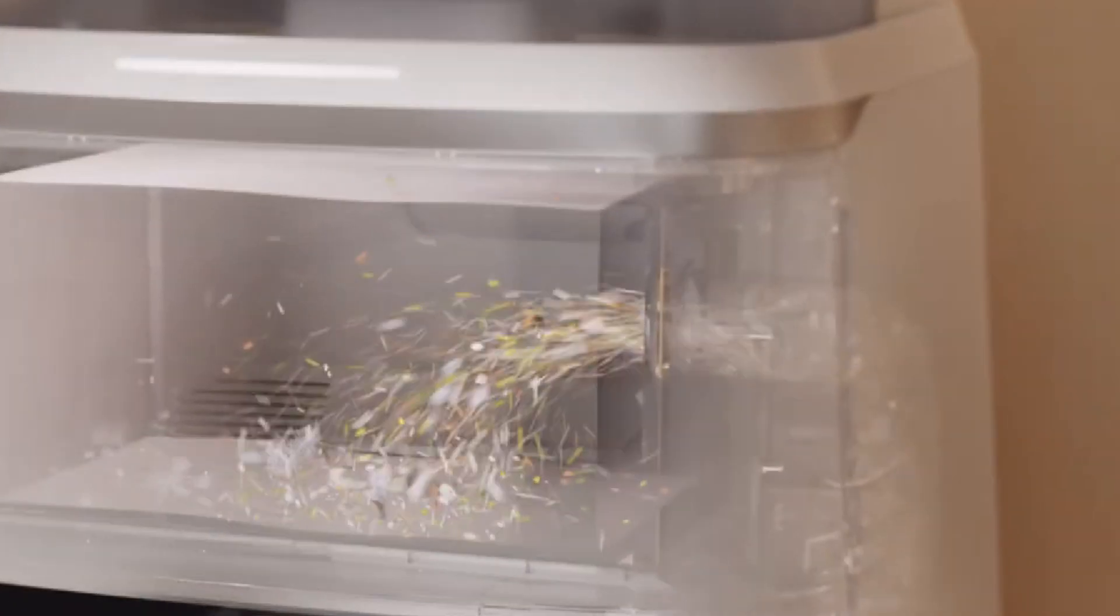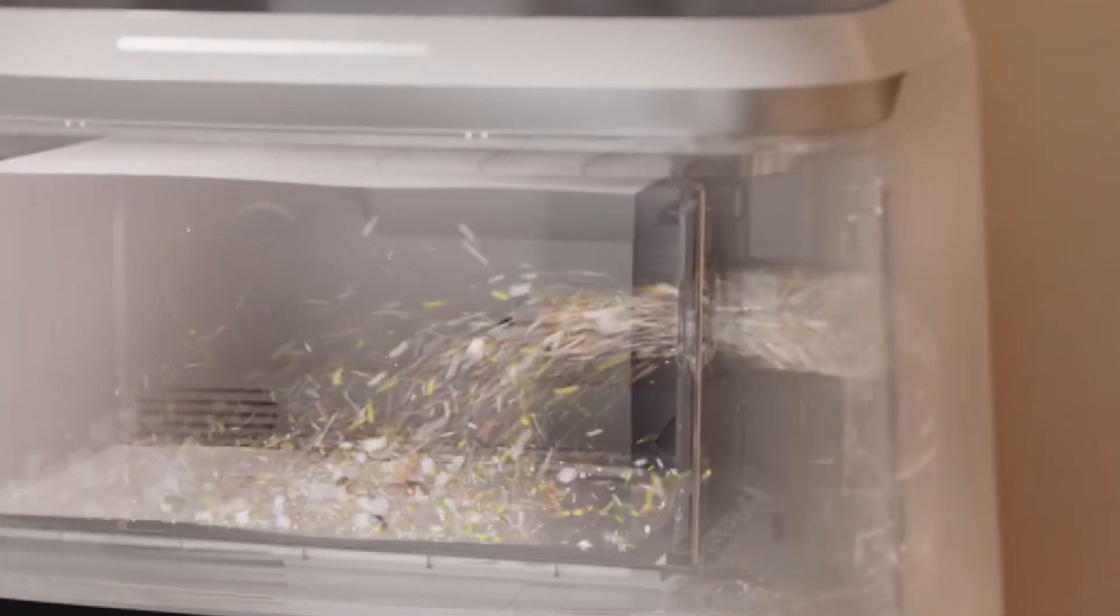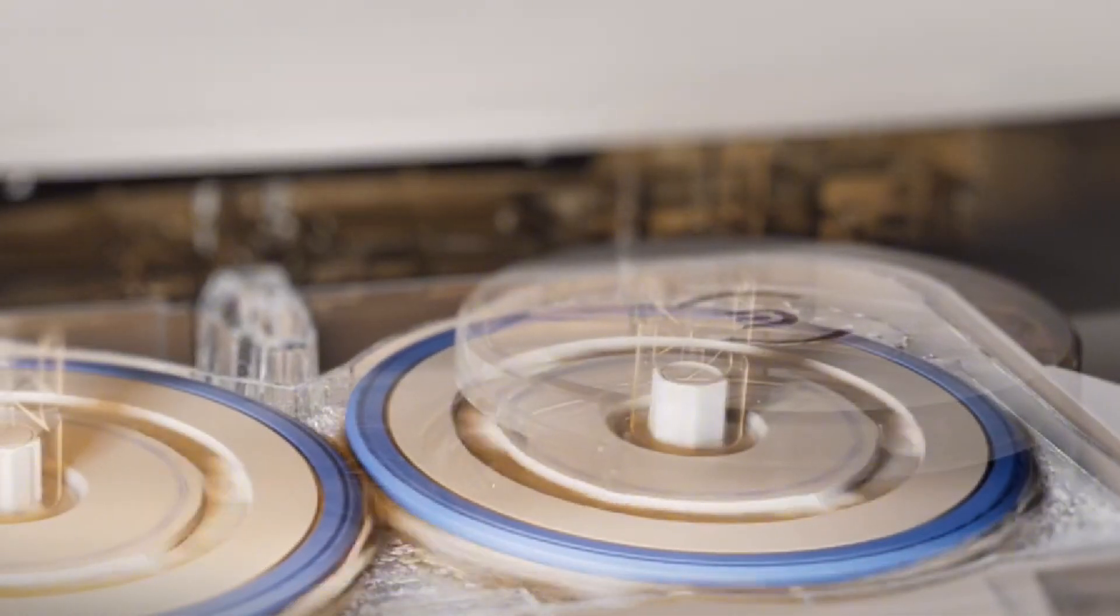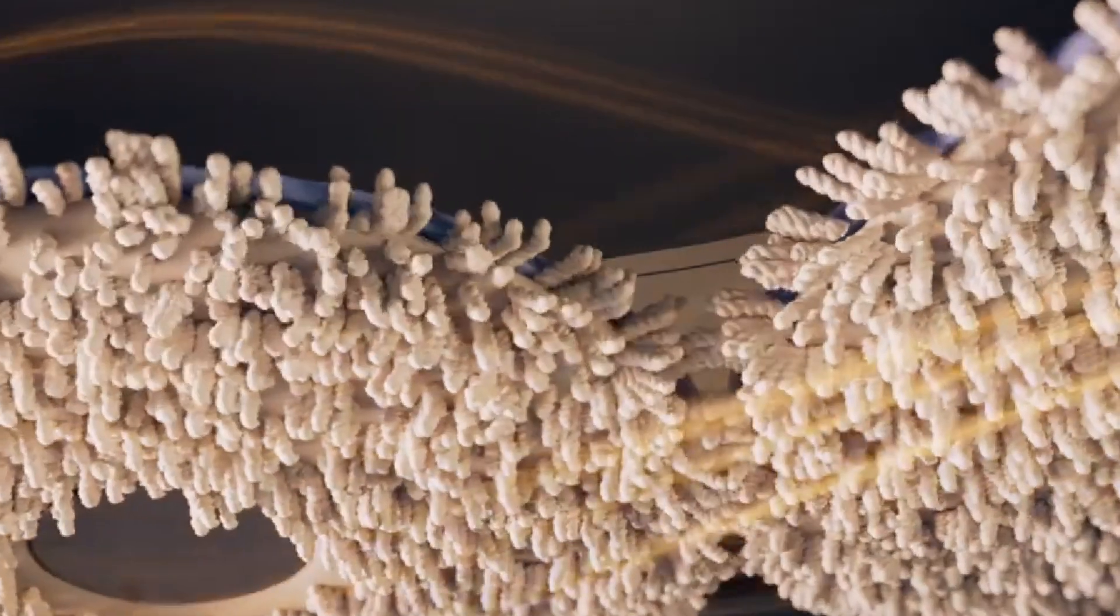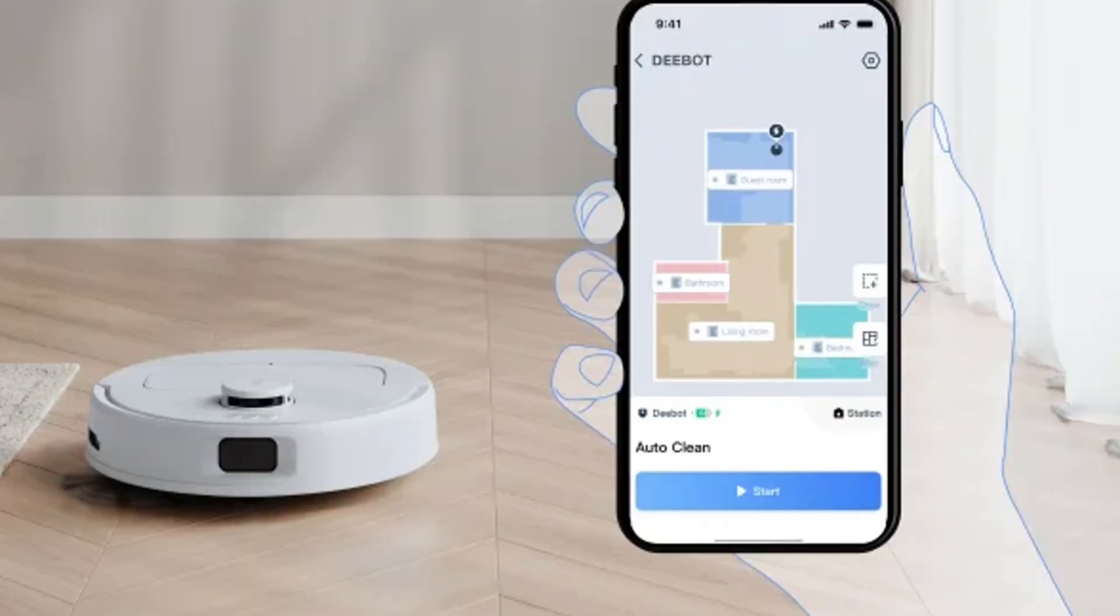However, it compensates for this with its smart home integration, allowing for seamless control through voice commands and mobile apps, something that the Roomba 10 also supports, but the D-Bot T30 may offer more flexible compatibility with various smart home ecosystems.